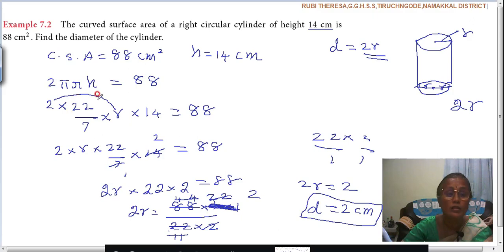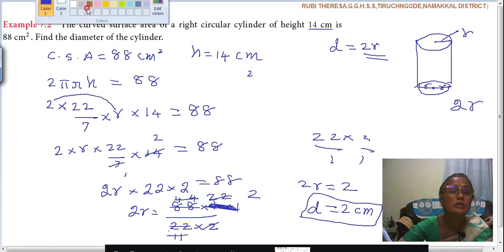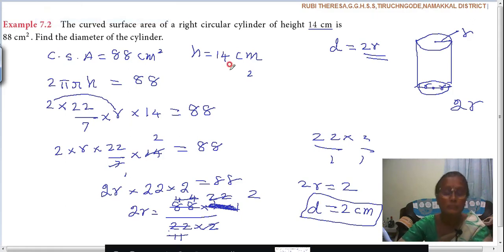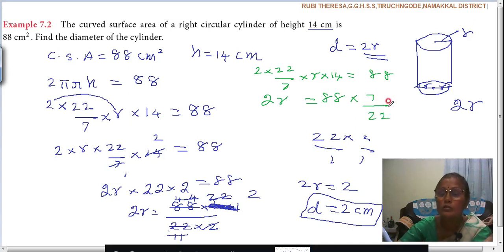Suppose if you don't want this method, just you can do it like this also. 2 into 22 by 7 into R into 14 equal to 88. No need to cancel it here. Suppose 2R equal to 88 into 22 by 7 means 7 by 22. Do you follow? Then into 14 means what? 1 by 14.